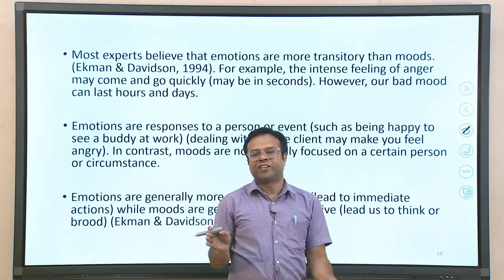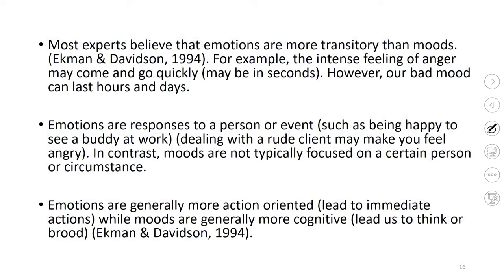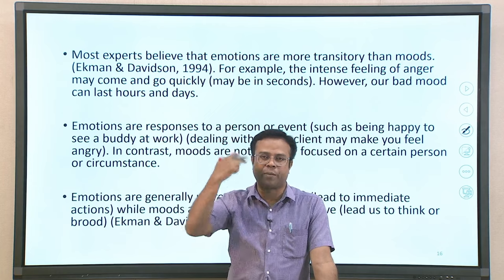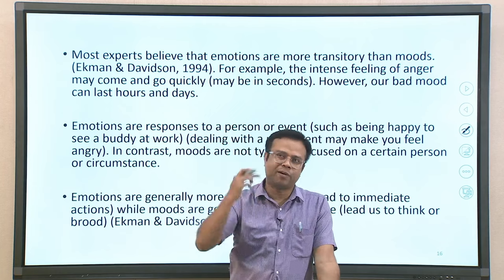Emotions are a response to a particular person or event. In contrast, moods are not typically focused on a certain person or event — the cause may be very unclear or more general. We have all experienced bad mood without any specific reason. Emotions are generally action-oriented and lead to immediate actions — when you are angry, you may start a fight or slap someone. Moods are generally more cognitive — at the mental level you feel bad mood; you may brood and think a lot, so they are more cognitively oriented rather than action-oriented.